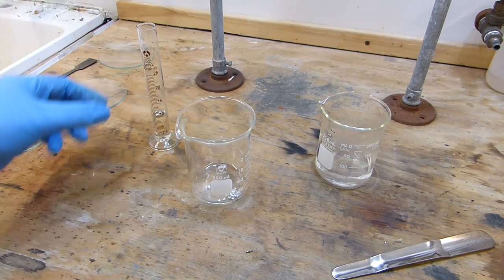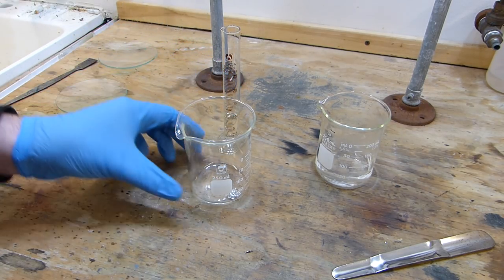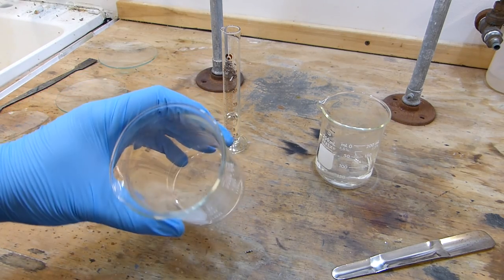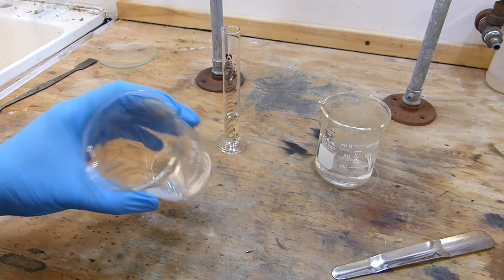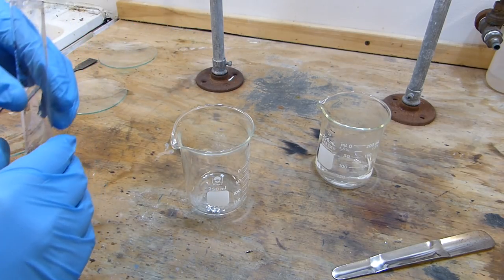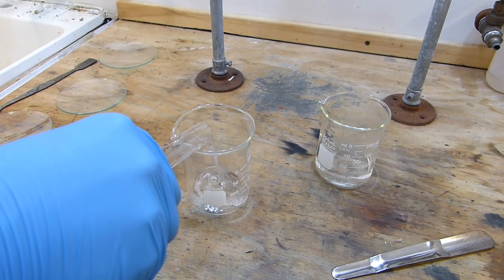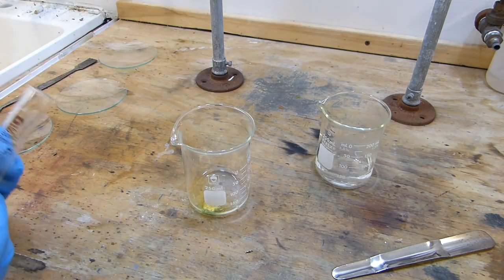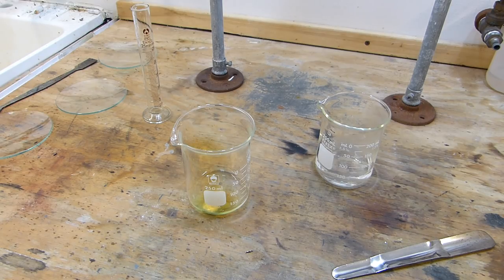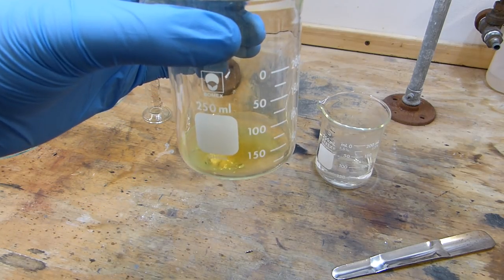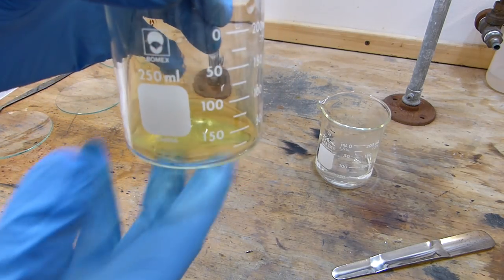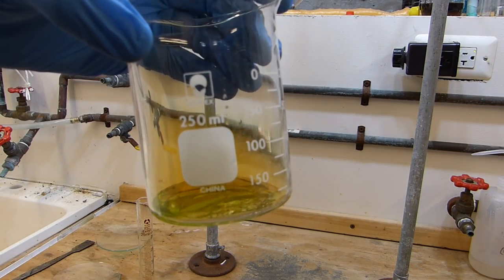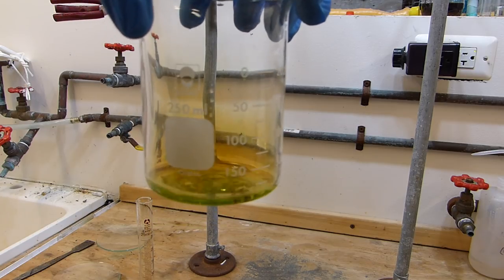All right, now for the fun part. So I'm going to add the nitric acid to this silver amalgam now and it's going to produce a lot of nitrogen oxide fumes, and that's why this has to be done either outside or in a fume hood like I've got here. And you can see the reaction immediately taking place and you can see here as it dissolves the brown gas of nitrogen dioxide is produced.